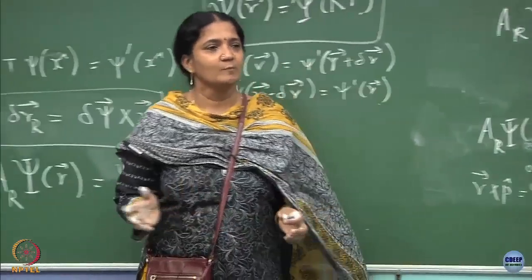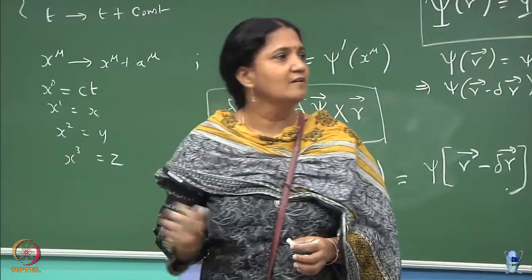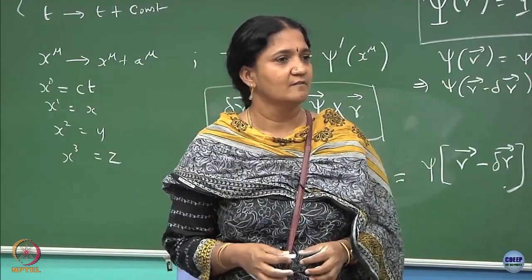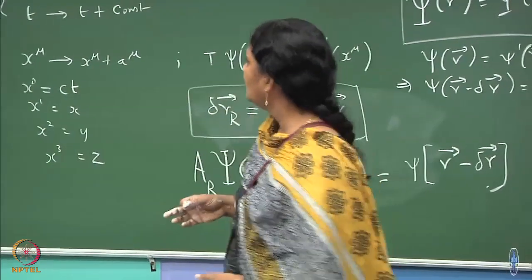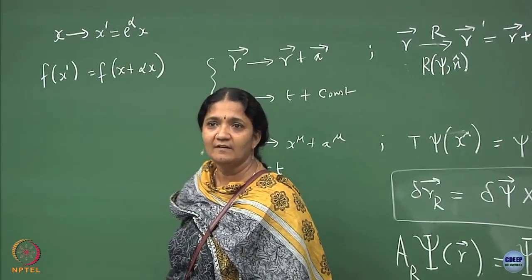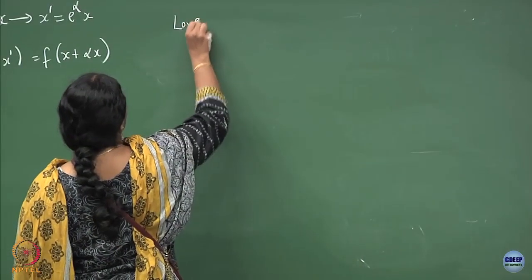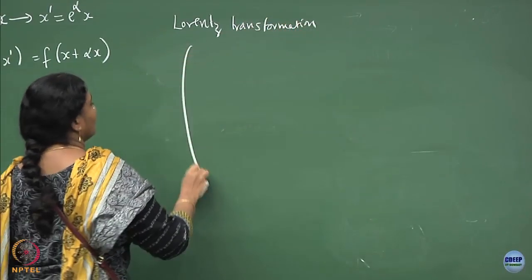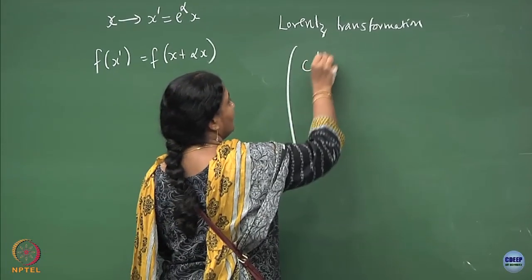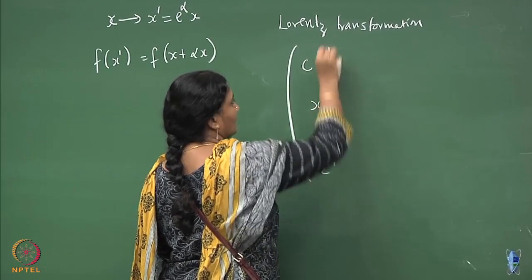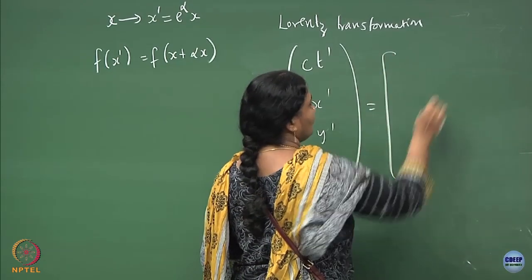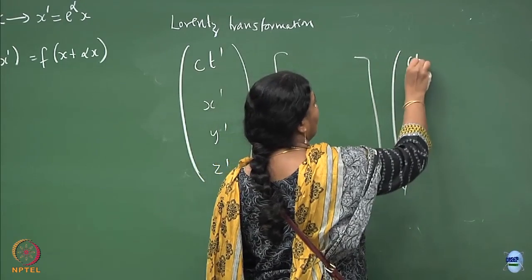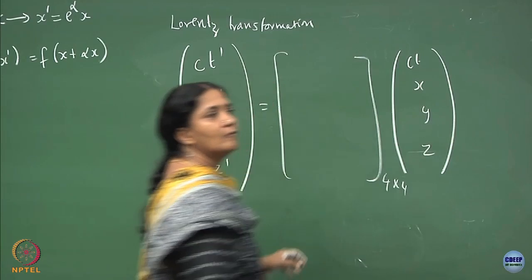Let us take the second inertial frame: one observer is stationary, another observer is moving with respect to the stationary observer with velocity v_x. Then the transformation — the way I wrote here — you could write for that also. For the Lorentz transformation you can have a 4×4 matrix acting on CT and x.